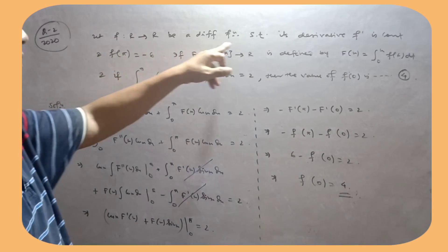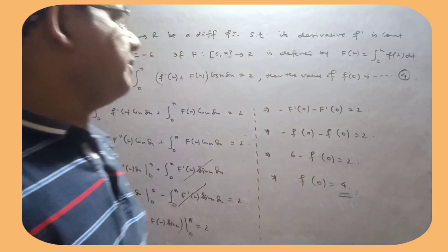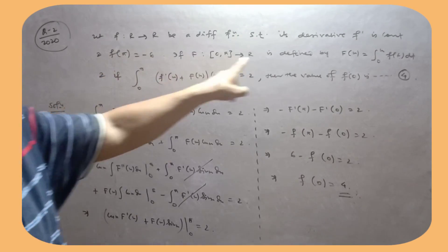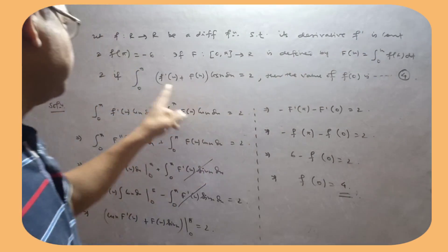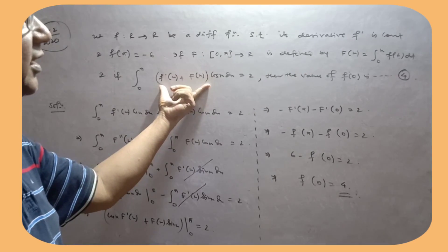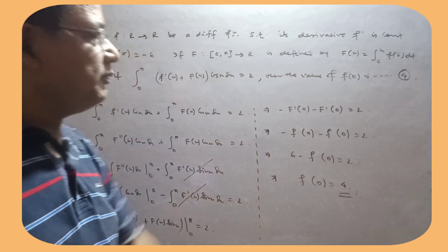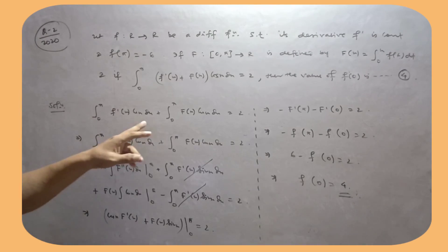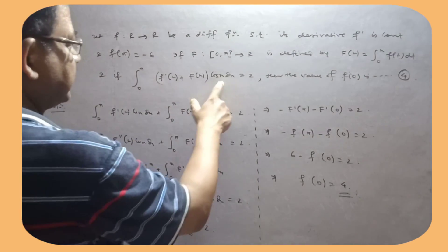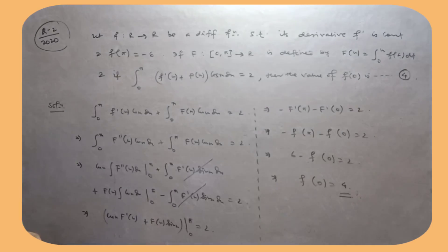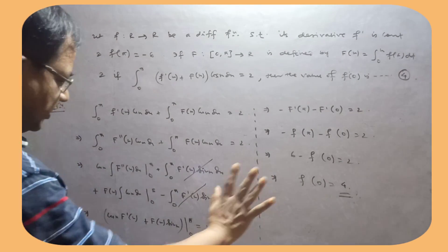Now let it be a differentiable function such that its derivative f dash is continuous. And these conditions given are f of x equal to this. This integral ka value 2 hai, then the value of f of 0 kya hoga? Yeh jo function hai, isko alag-alag kar diya. Bas, integration by parts apply kya. Or kuch nahi kya, nothing else.